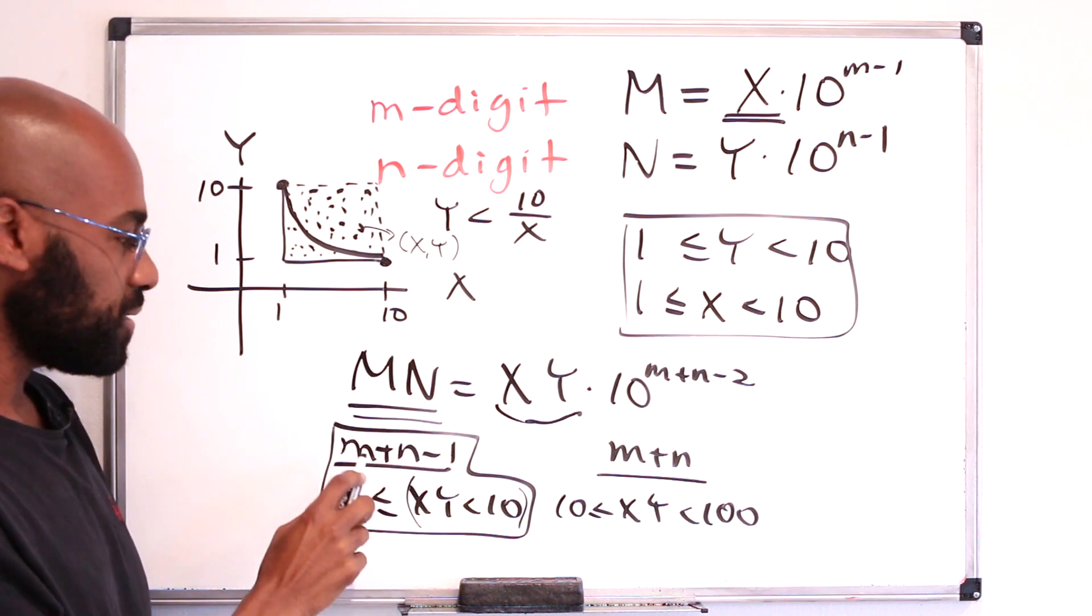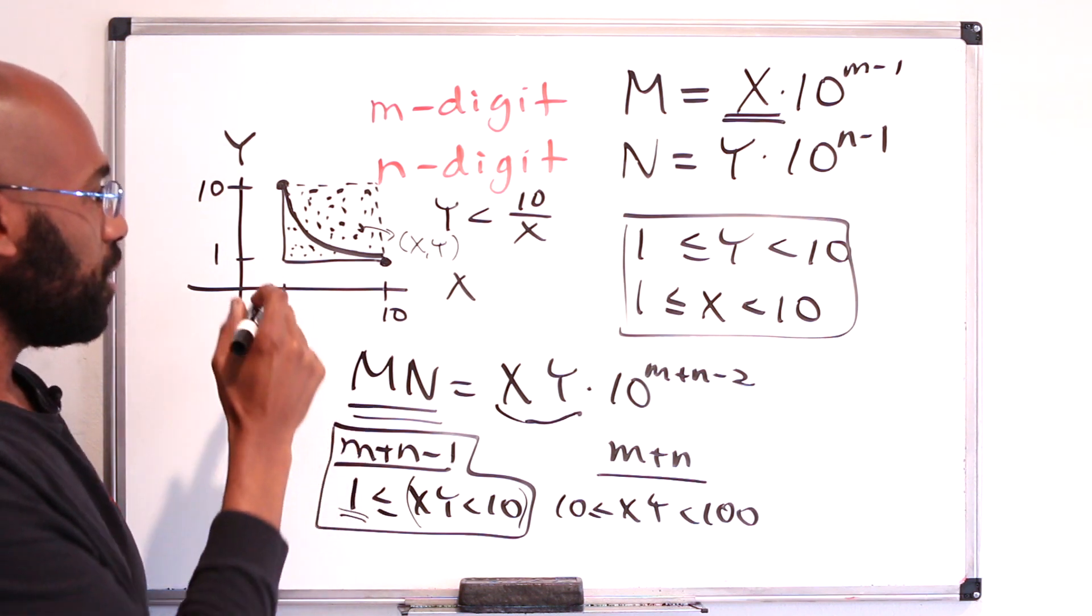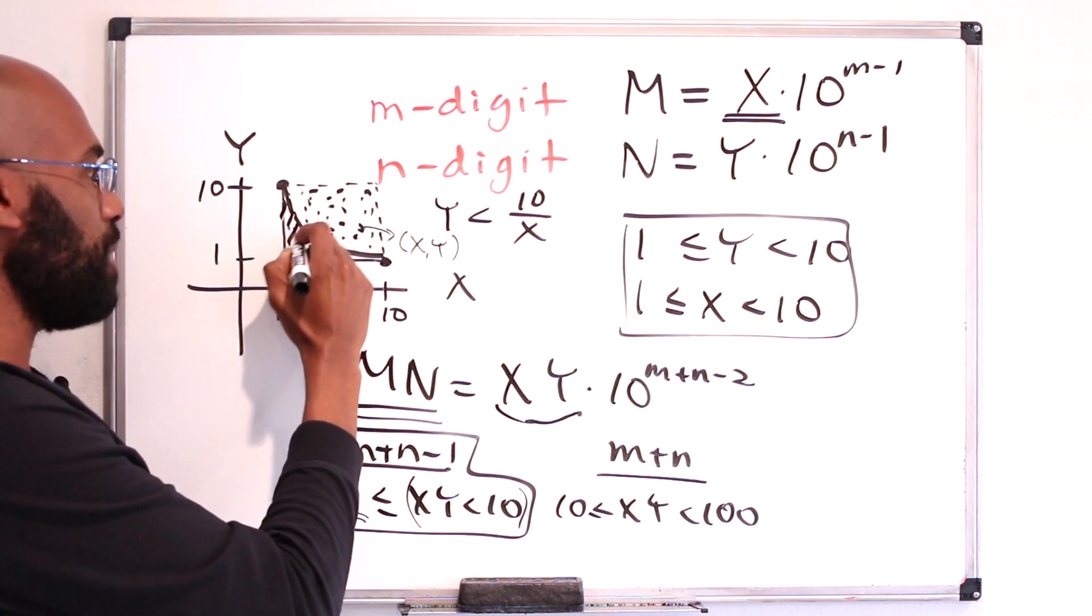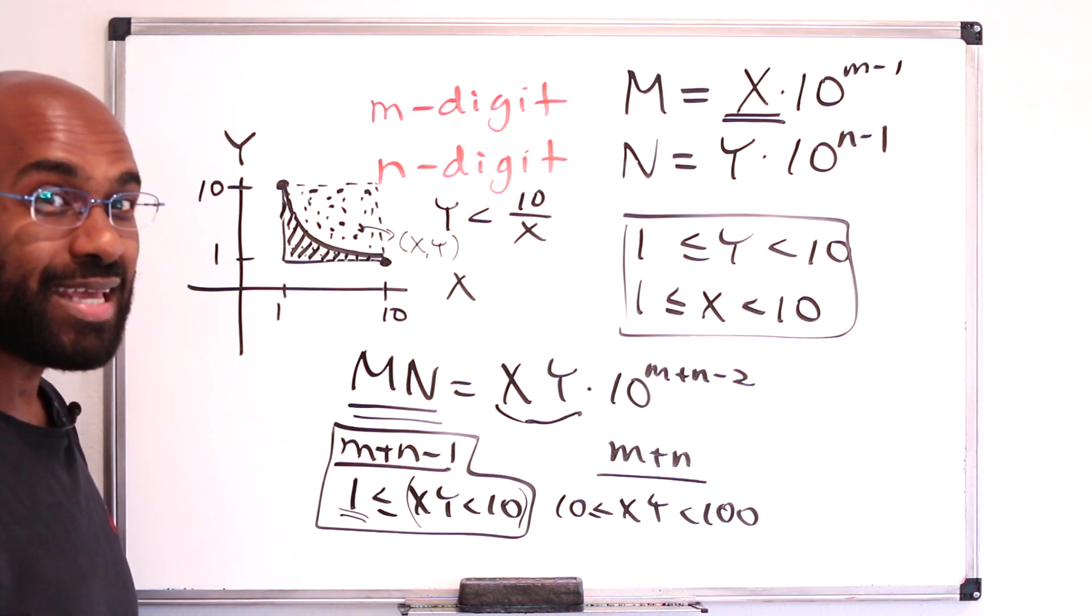So a way to estimate the number of products that have m plus n minus 1 digits in them is to actually look at the region of this box that's taken up by this area right over here. And that's actually an integral.